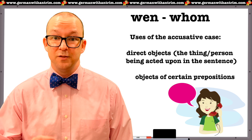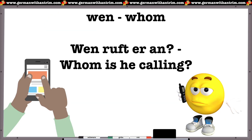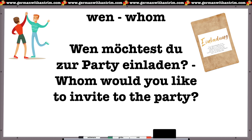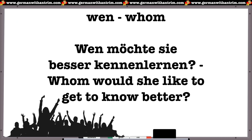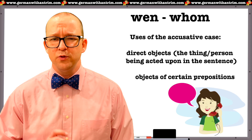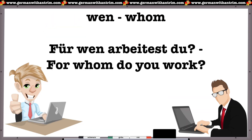Wen can indicate a direct object — the person being acted upon. For example: Wen ruft er an? (Whom is he calling?) Wen möchtest du zur Party einladen? (Whom would you like to invite to the party?) Wen möchte sie besser kennenlernen? (Whom would she like to get to know better?) You can also use Wen with a preposition and the accusative case: Für wen arbeitest du? (For whom do you work?)